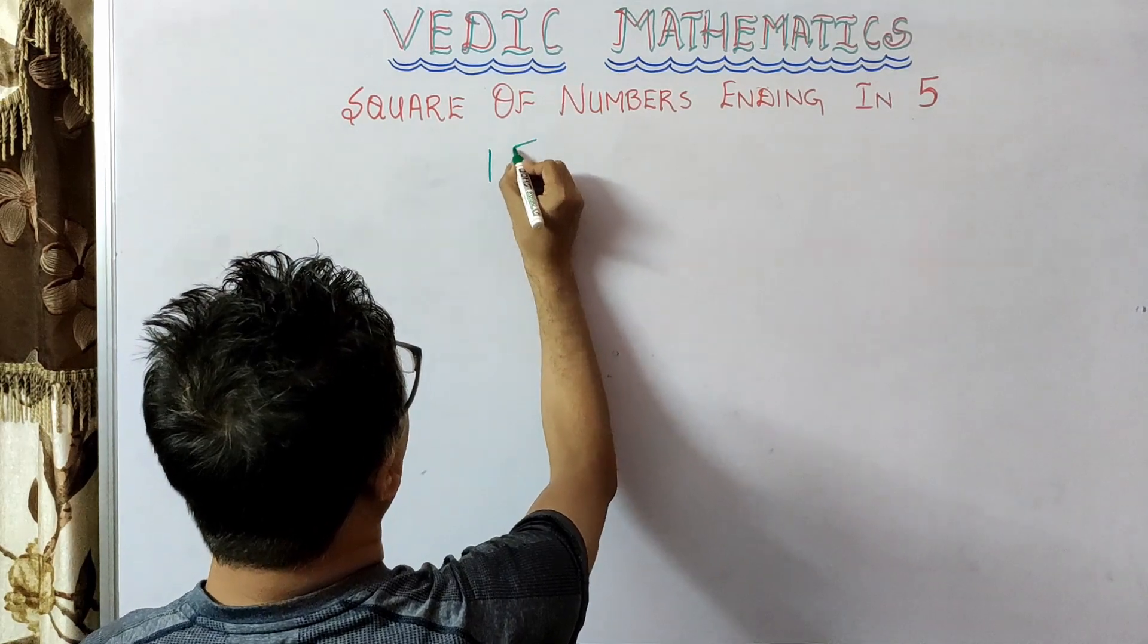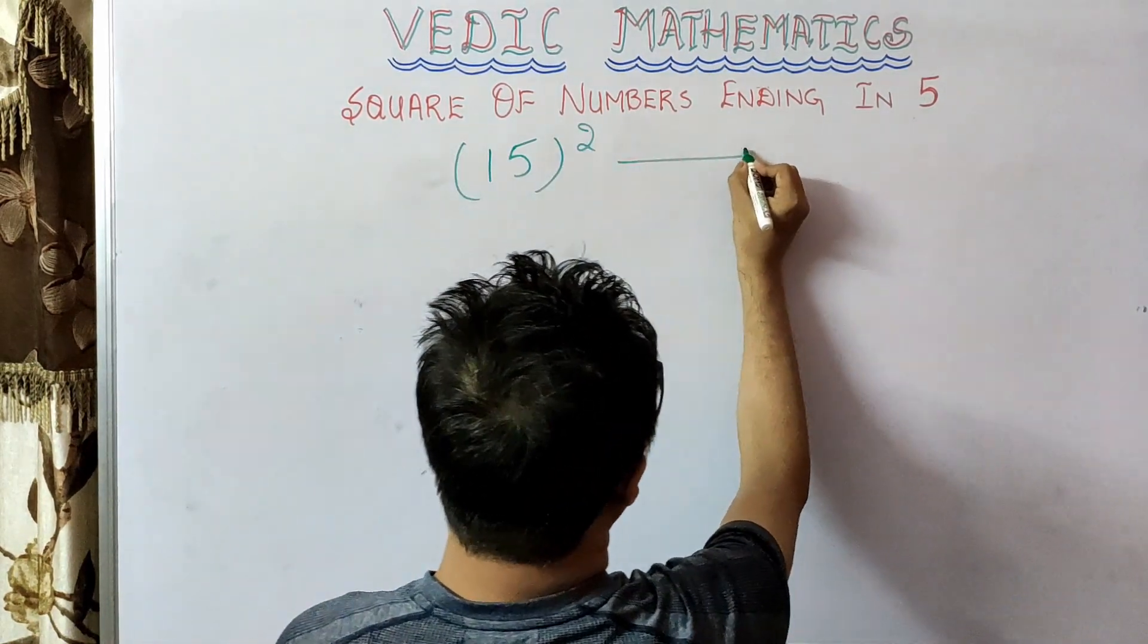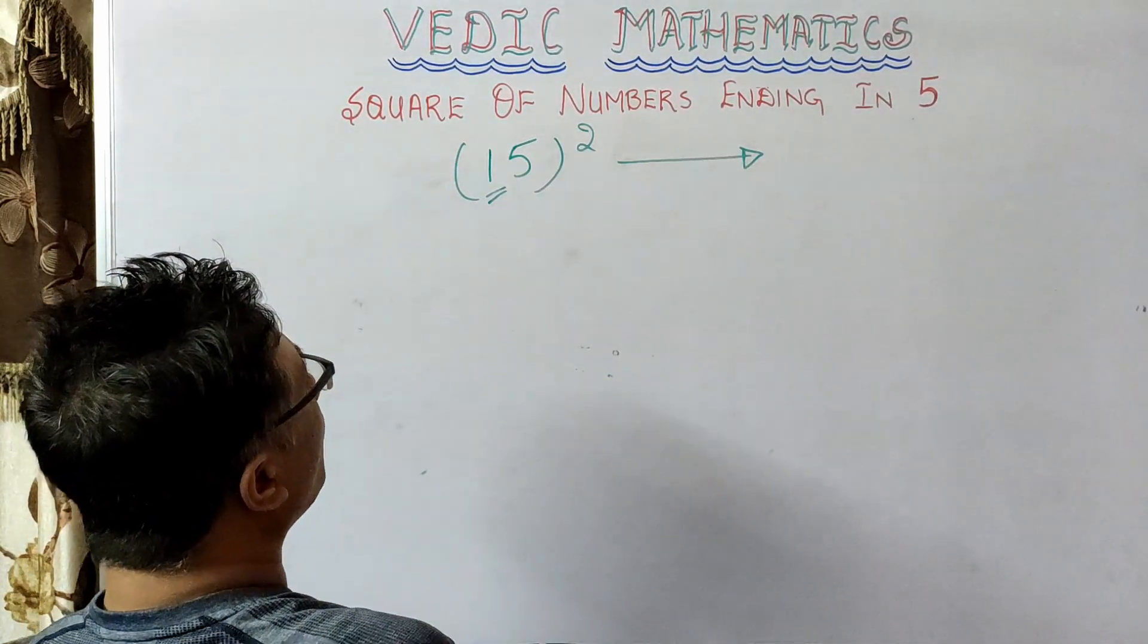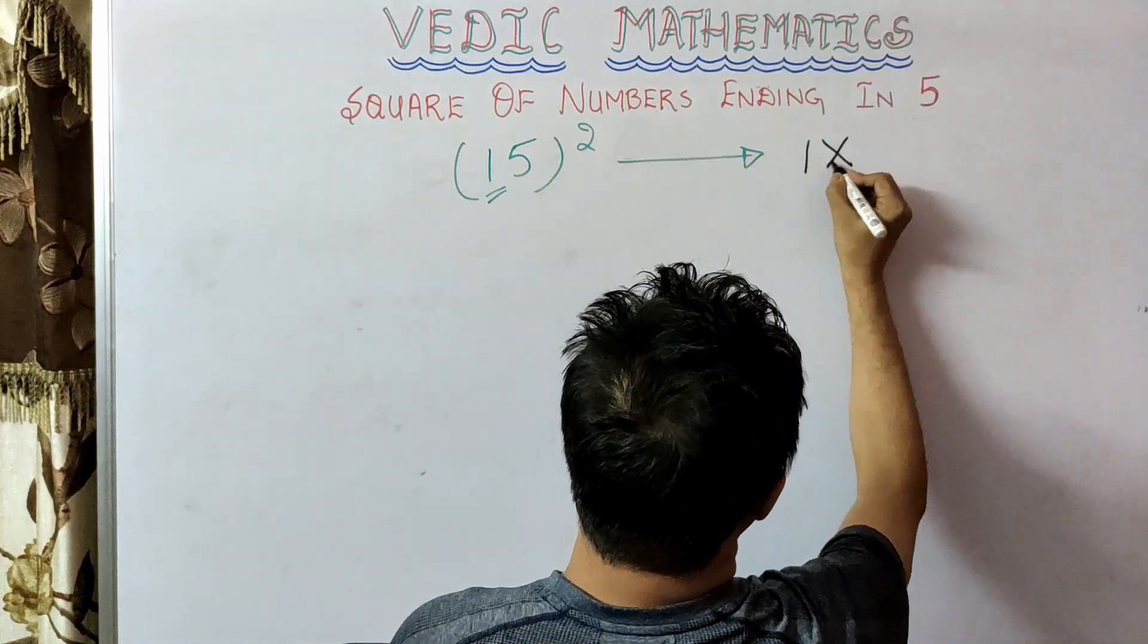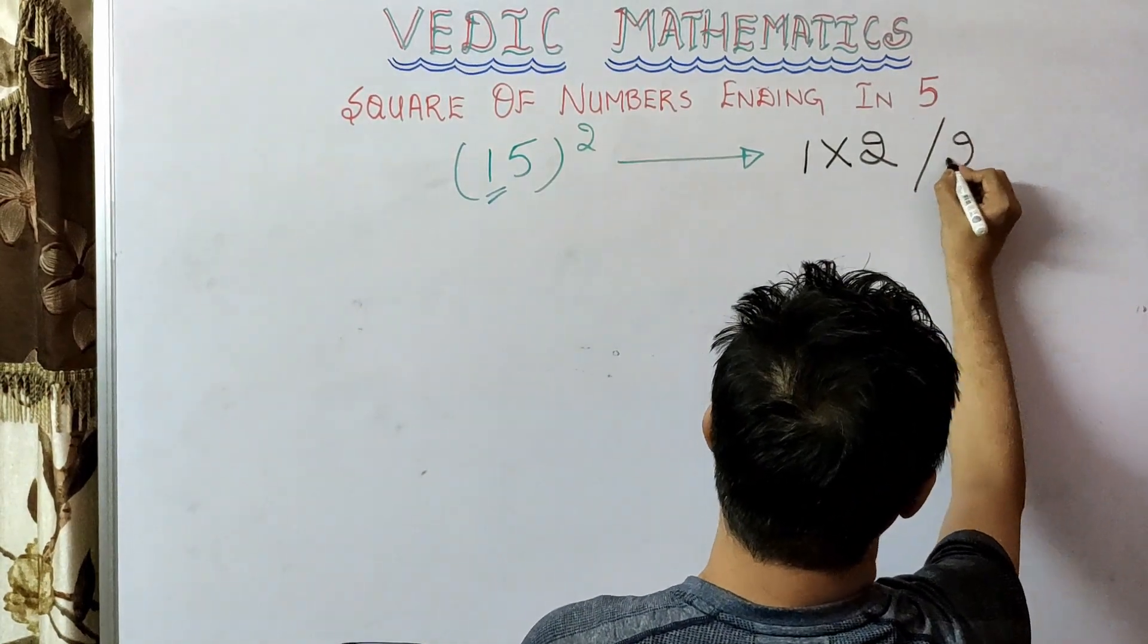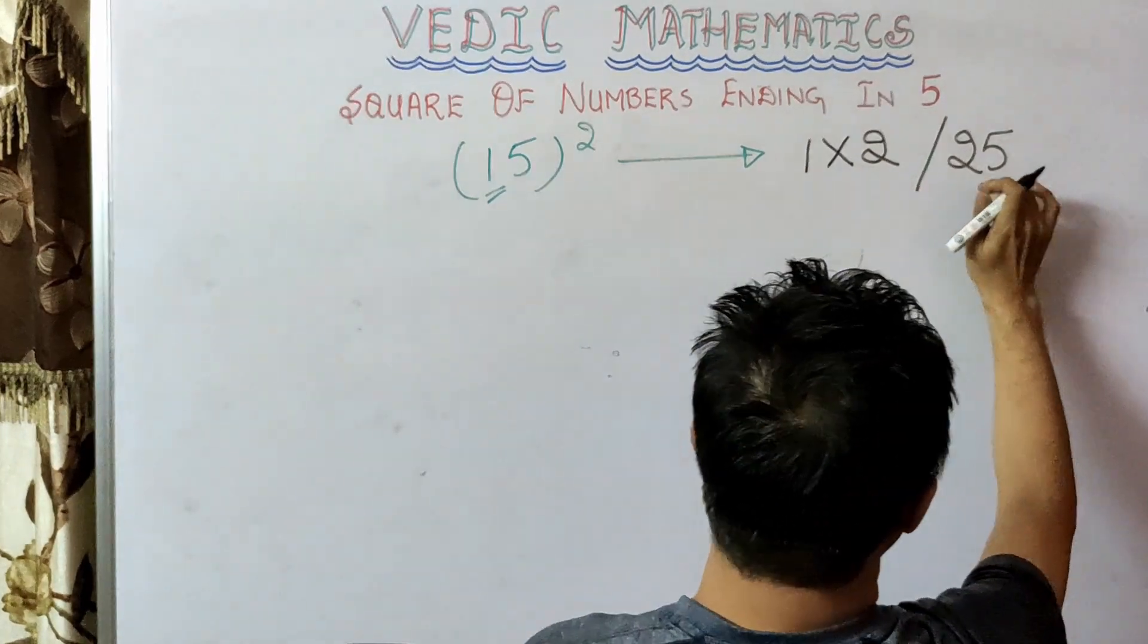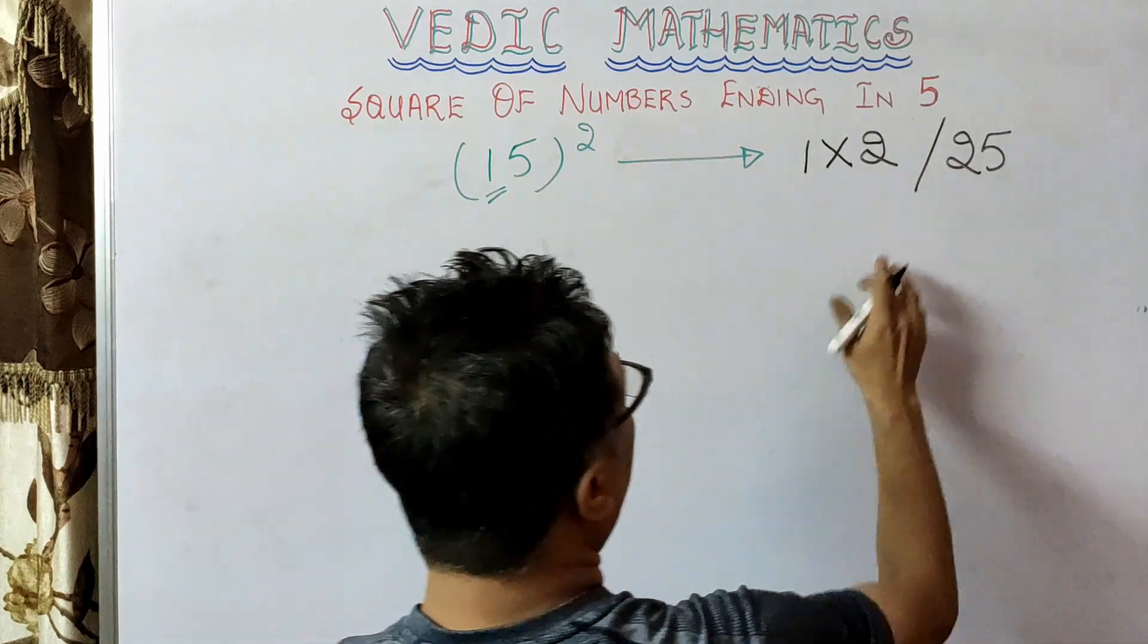find the square of 15. This is 1, so now you have to multiply 1 with the number next to 1, that is 2. And then for the second part of answer you have to write 5 square, that is 25. This part will remain constant in all our answers, so you have